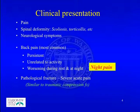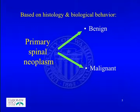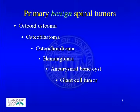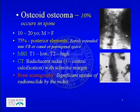Night pain warns of a possible neoplastic process. Tumors can also cause pathological fracture leading to severe acute pain, similar to a traumatic compression fracture. Primary spinal tumors, based on their histology and biological behavior, are divided into benign and malignant. The primary benign spinal tumors include osteoid osteoma, osteoblastoma, osteochondroma, hemangioma, aneurysmal bone cysts, and giant cell tumors.